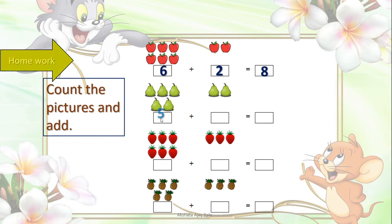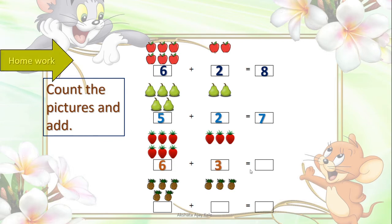Here we can see 5 pears plus 2 pears. These are 5, this is 6, and this is the 7th one. So our answer is 7. Now here strawberries. Again here 6 strawberries plus 3 strawberries together make. How many? 9. Very good.